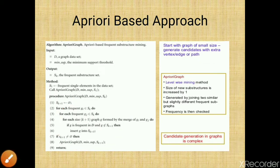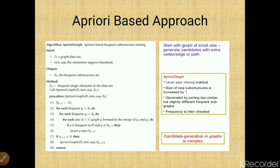The frequency of the newly formed graphs is checked; those found to be frequent are used to generate larger candidates in the next round. Given two graphs Gi and Gj, both subsets of Sk, we search for a size k+1 graph and merge Gi and Gj. We join two similar but slightly different subgraphs. If the newly formed graph in D is frequent, it is inserted into the frequent item set. That is the procedure for the apriori-based approach.